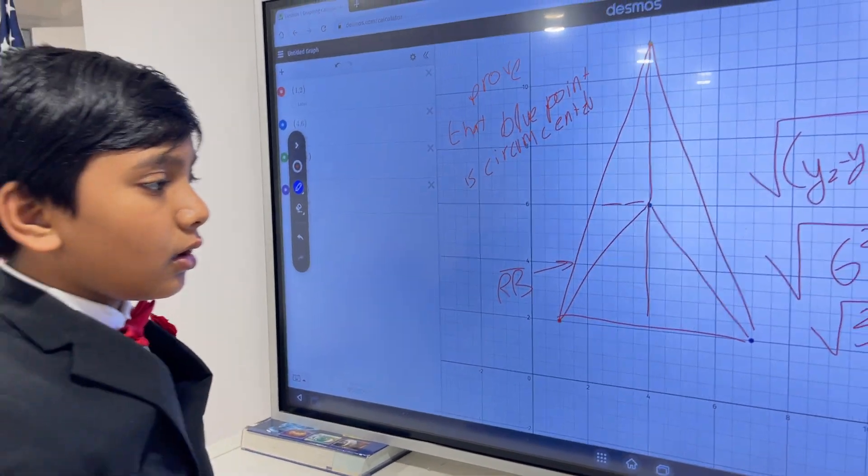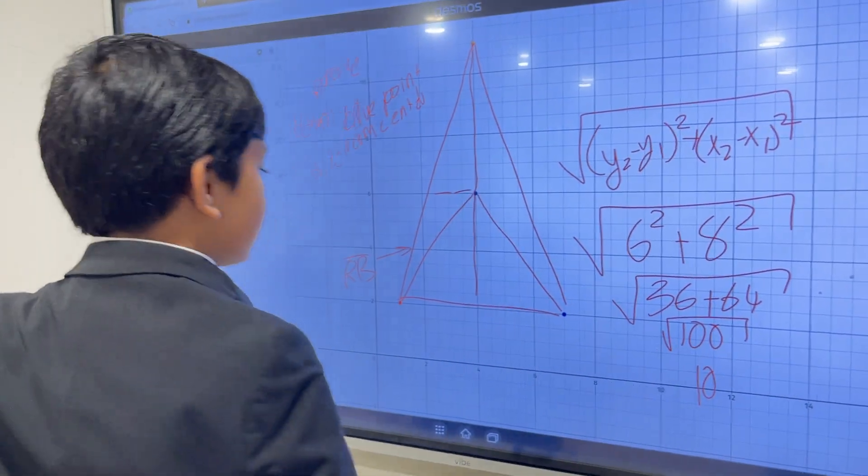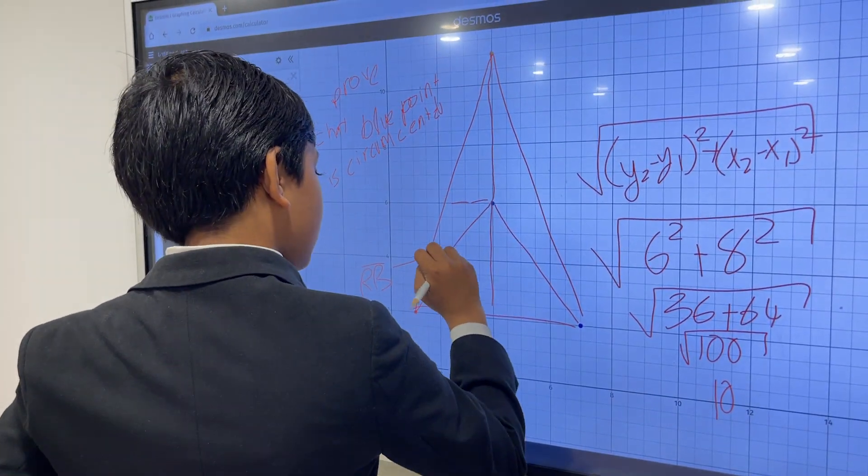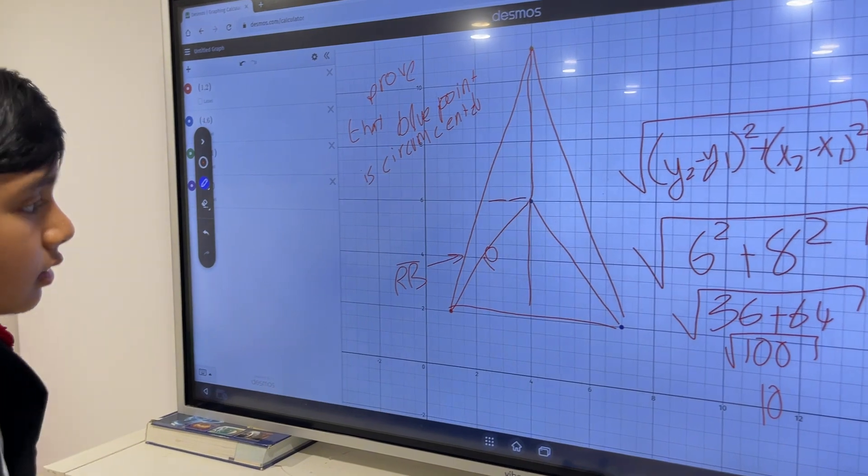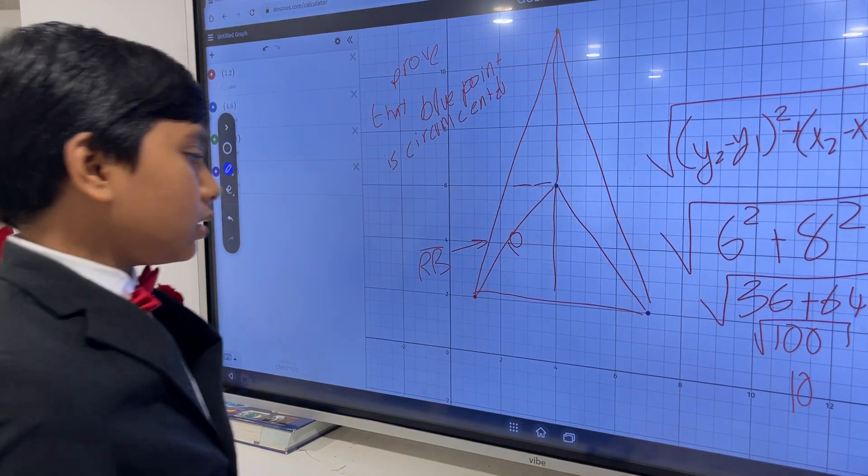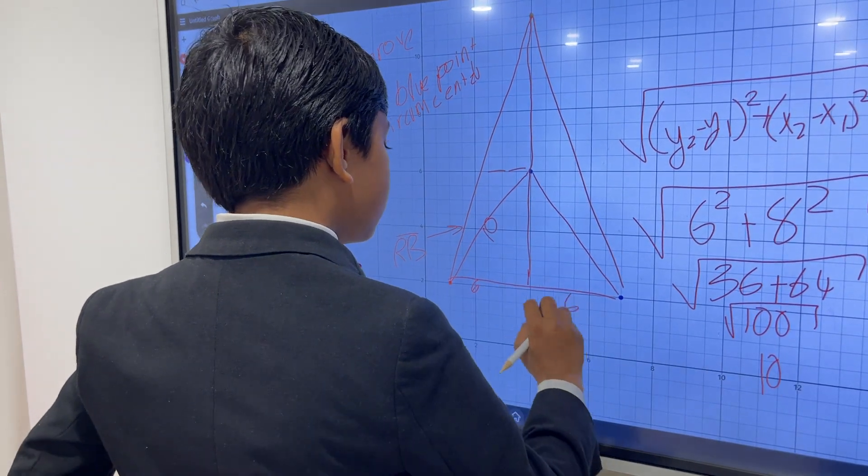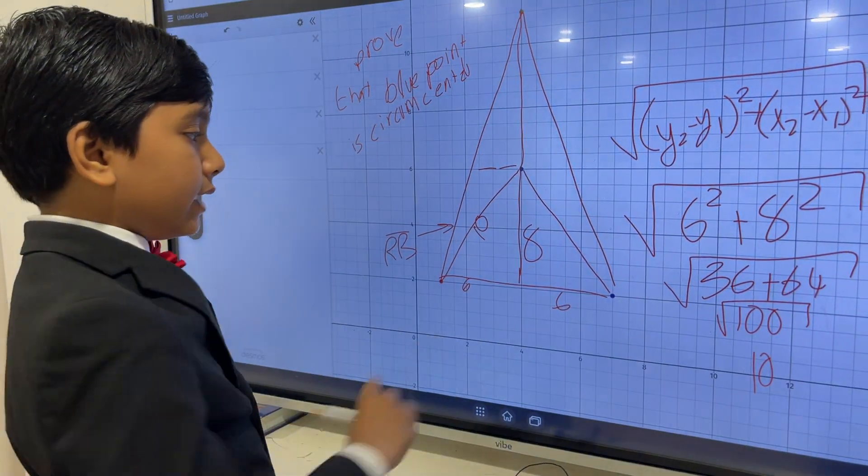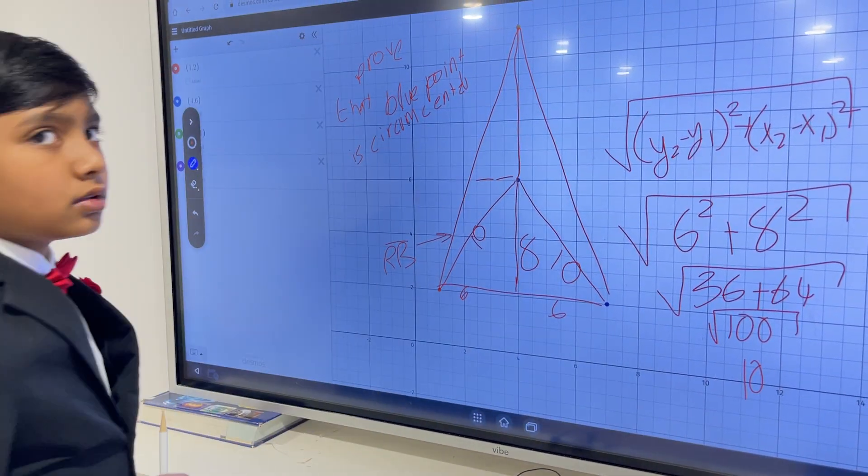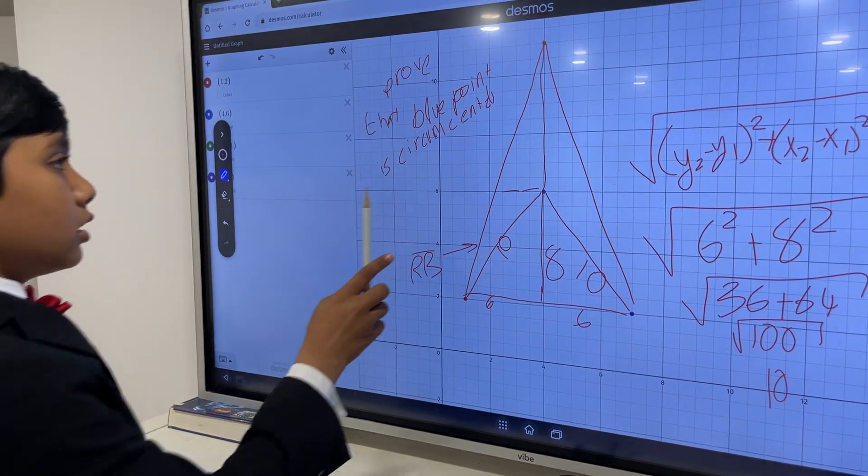All right. Wait. Yeah, it's root 100. So that means this is 10. Now for the other side, it looks like there's a similar story, because this is also 6, and this is similarly 8, so this must be 10 as well.